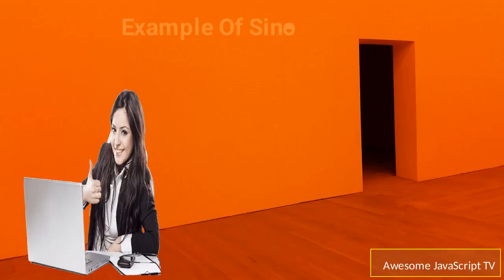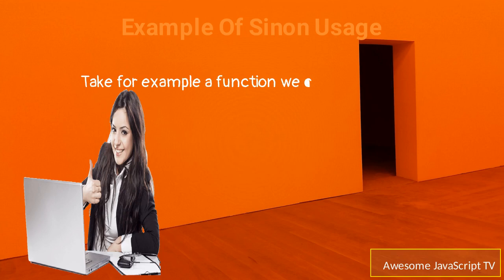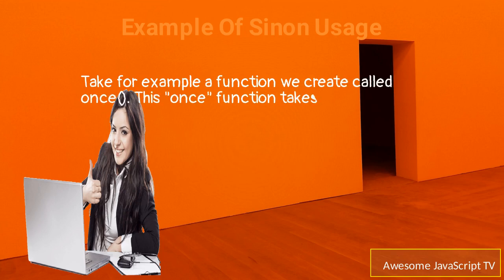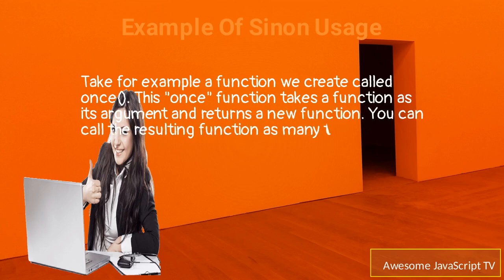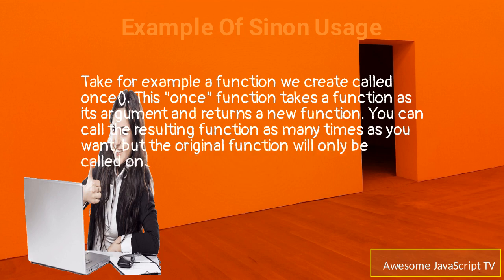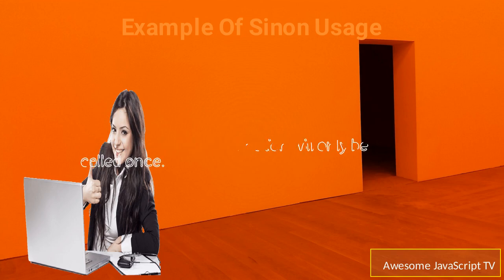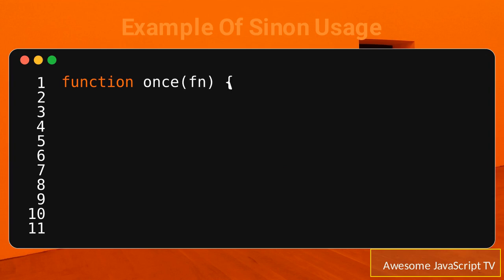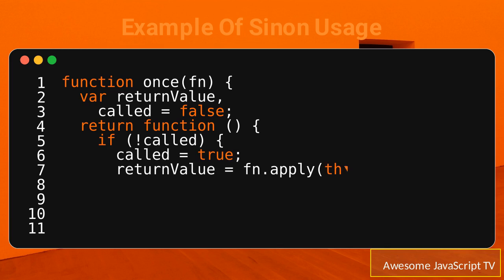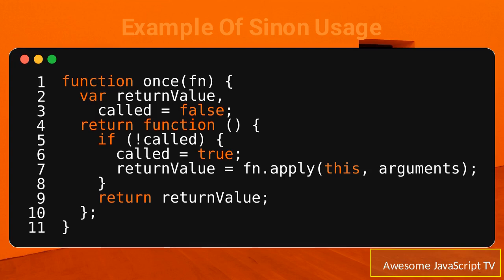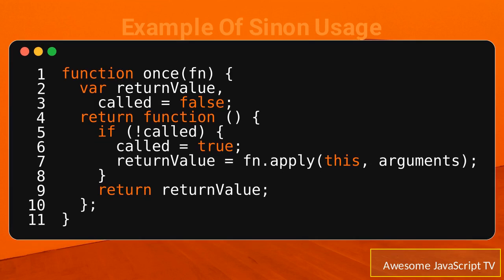Take for example a function we create called once. This once function takes a function as its argument and returns a new function. You can call the resulting function as many times as you want, but the original function will only be called once. This once function is created by the library using a unit.